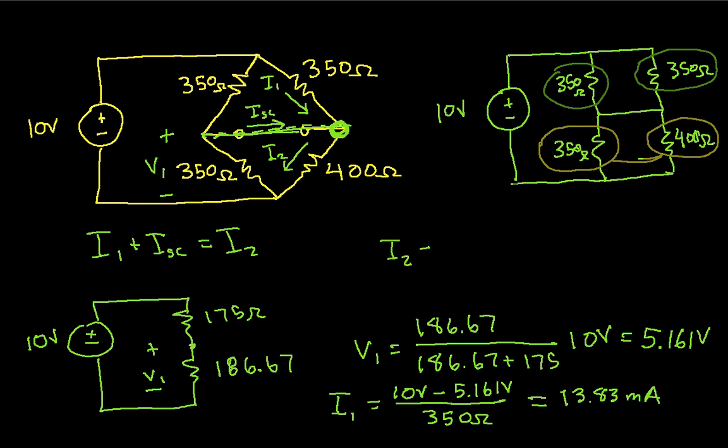And then I2, I'll clear out a little bit of space for I2. I2 will be 5.161 volts over 400 ohms, which when I compute this guy, it gives me 12.90 milliamps.